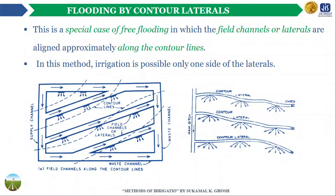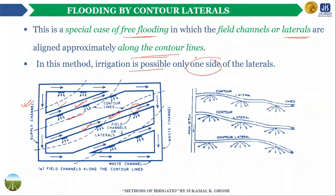Contour flooding, or flooding by contour laterals, is a special case of free flooding in which the field channels or laterals are aligned approximately along the contour lines. As visible in this figure, the laterals are approximately along the contour lines and are known as contour laterals. In this method, irrigation is possible on only one side of the laterals, similar to the case when laterals are aligned at right angles to the sides of the field.